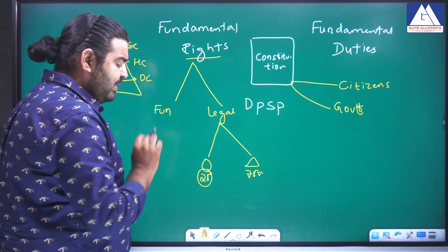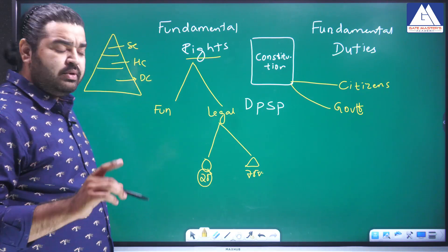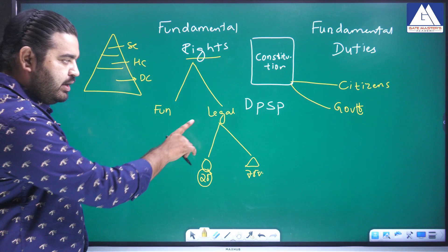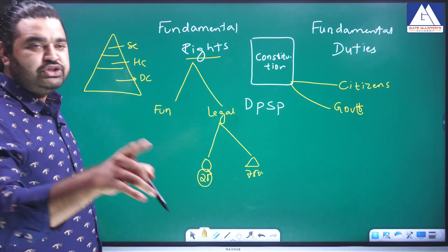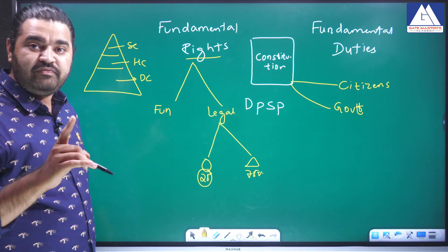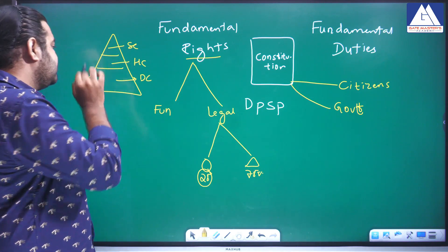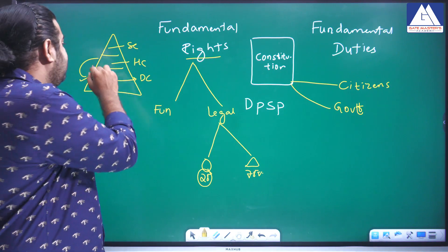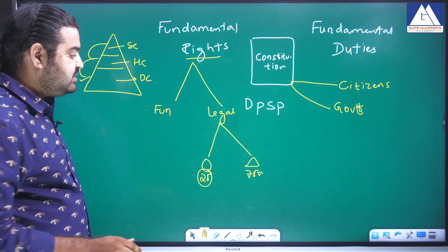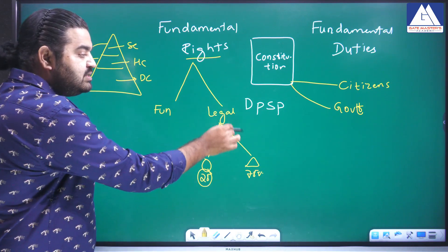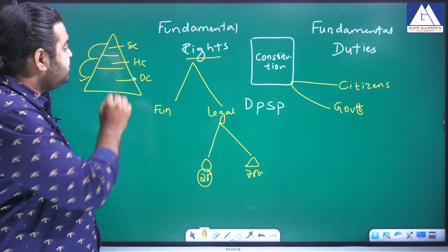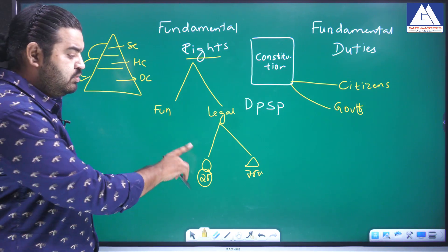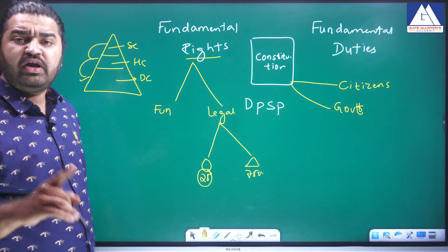Based on this distribution, she has to approach a court to get justice. In the case of a legal right, she cannot move to the Supreme Court or High Court directly in the first instance. She has to move to the District Court first, then by way of appeal to the High Court, and then by way of appeal to the Supreme Court. She cannot skip directly to the higher courts.